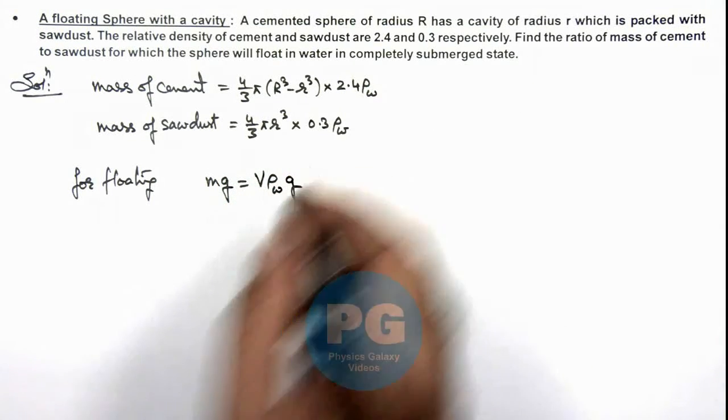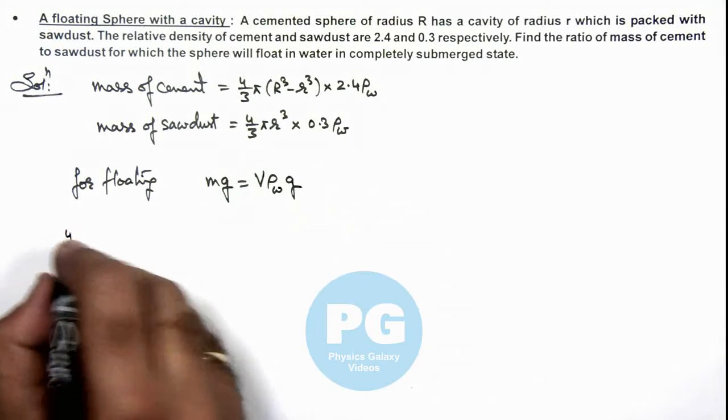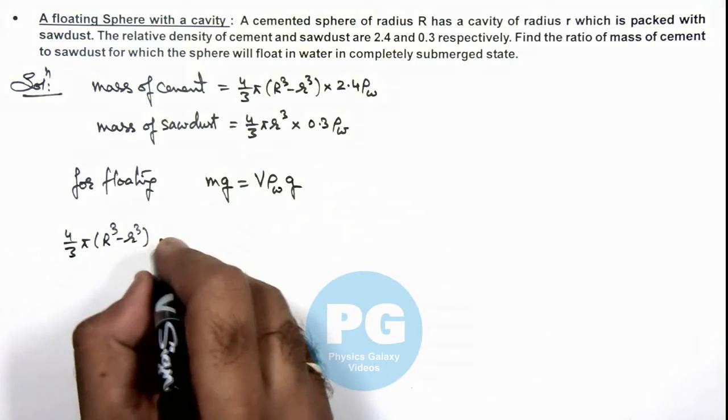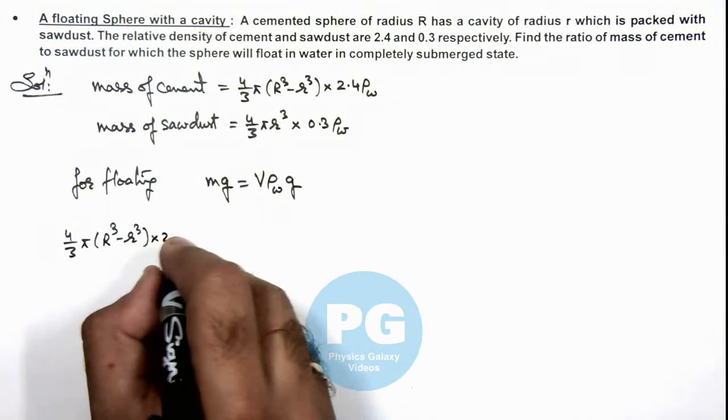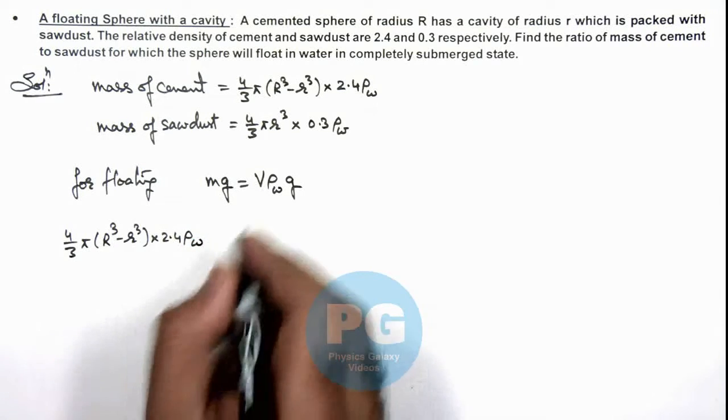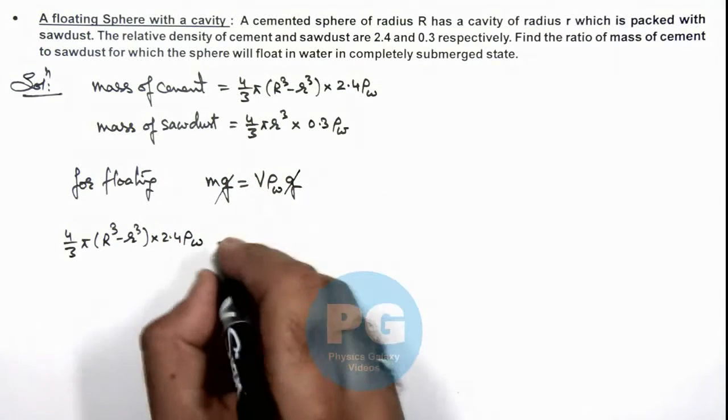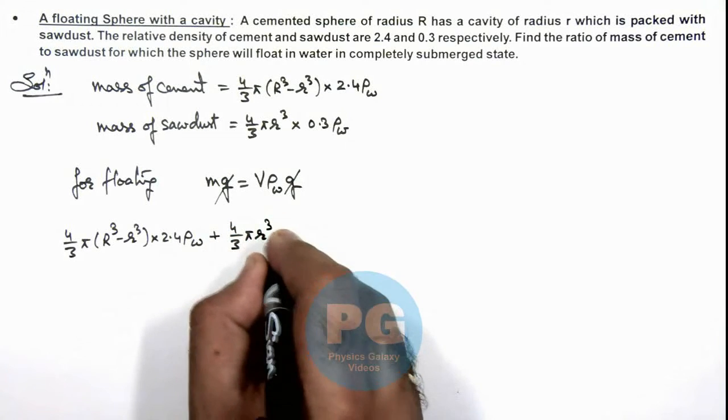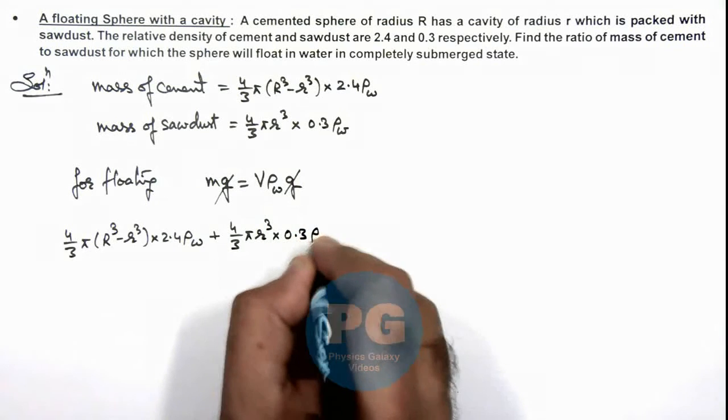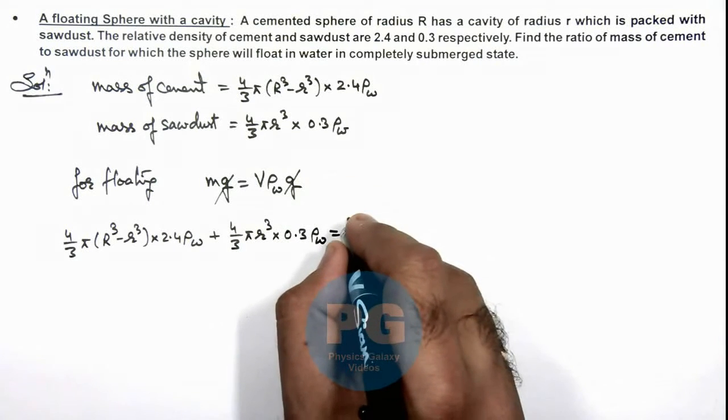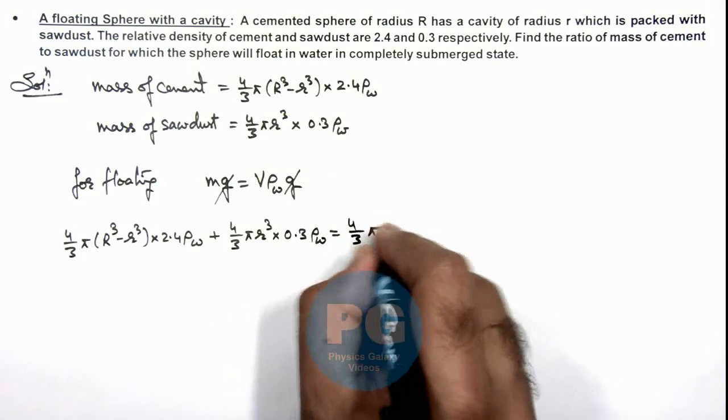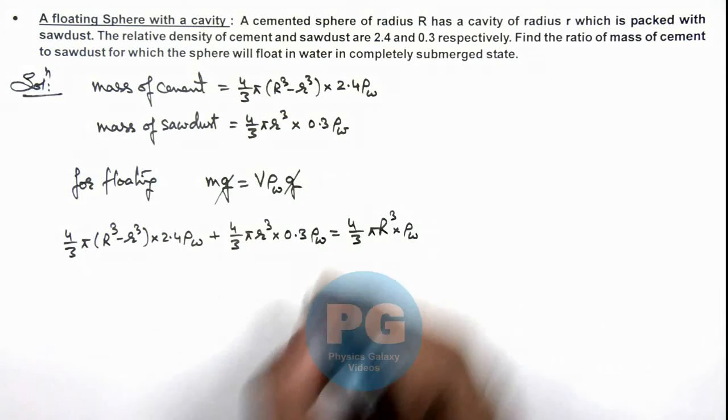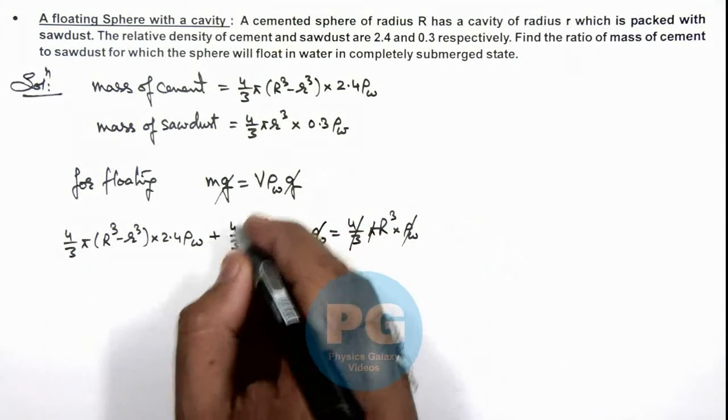So in this situation mass we can substitute as 4 by 3 π (R³ - r³) multiplied by 2.4 ρ water, here g we can cancel out here only, plus 4 by 3 π r³ multiplied by 0.3 ρ water is equal to total volume is 4 by 3 π R³ multiplied by ρ water. If we simplify this relation here 4 by 3 π and ρw gets cancelled out.